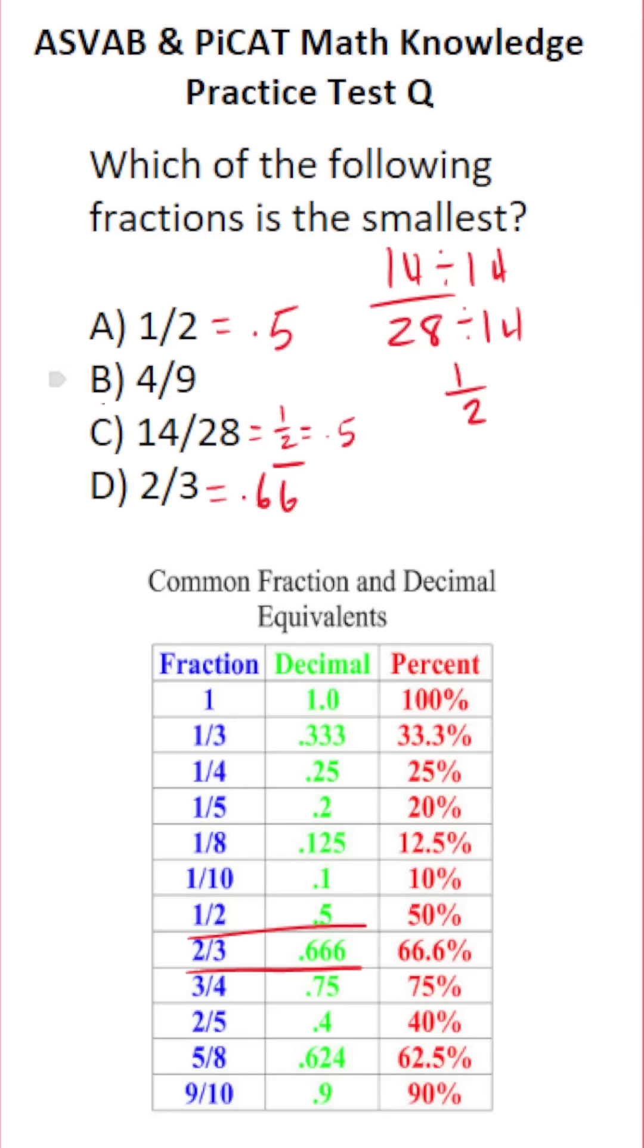So the only other thing we have to do is convert 4 ninths to decimal so we can compare it. And again, all fractions can be read as long division. We could read this as 4 divided by 9. And by doing this long division, we'll have our decimal equivalent accordingly.